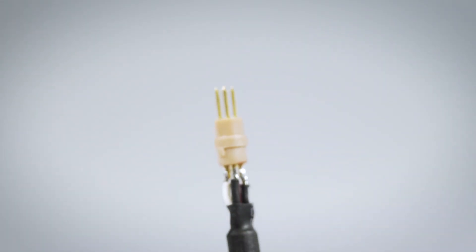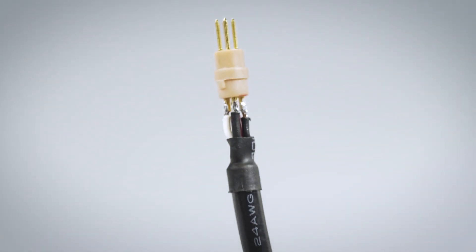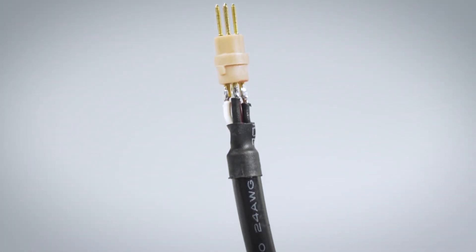If you are using the shield or drain as the fourth conductor, be sure to apply heat shrink around the outer jacket of the wire.